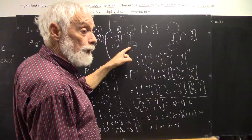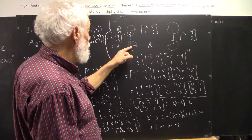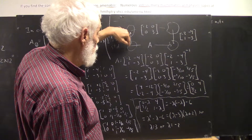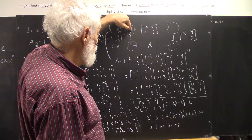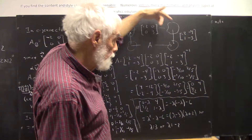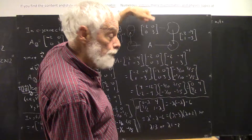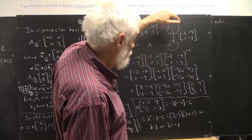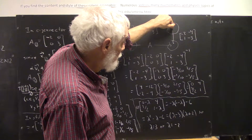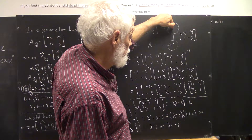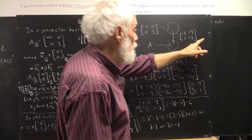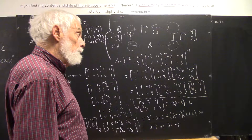If we start in the standard basis and apply the inverse matrix, we get the representation of that vector with respect to the eigenvector basis. We can then multiply it by this diagonal matrix — very simple multiplication, that's one of the advantages of the diagonal matrix. We get the transformed matrix relative to the eigenvector basis, then map it back by the column of eigenvectors matrix.